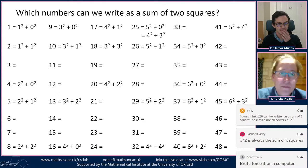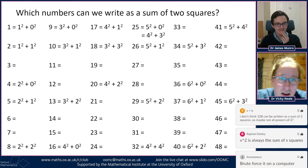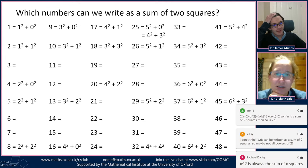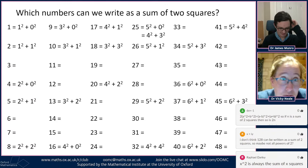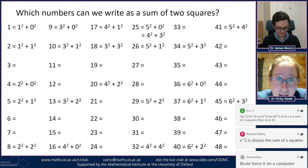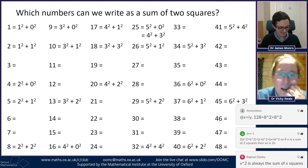Someone said we could do it on a computer — yes, but you still have to decide what process the computer will use. Every square number plus two cannot be written as a sum of two squares — interesting idea. Let me check: one squared plus two is three — not a sum of two squares; two squared plus two is six — not; three squared plus two is eleven — not; four squared plus two is eighteen — not; five squared plus two is twenty-seven — not; six squared plus two is thirty-eight — not.